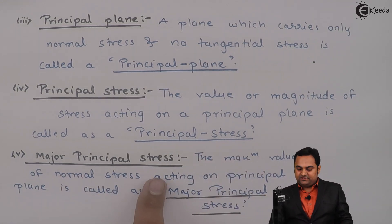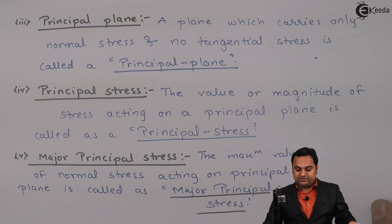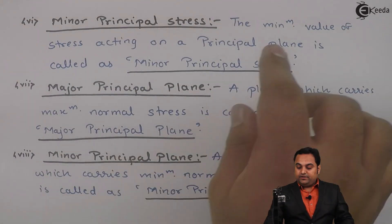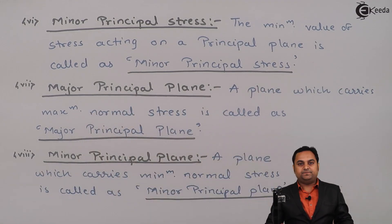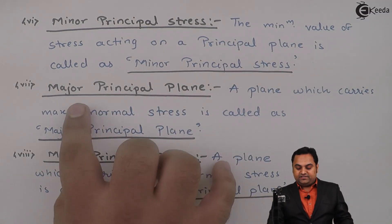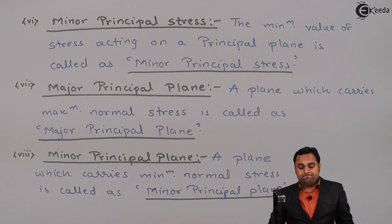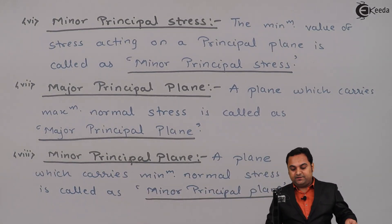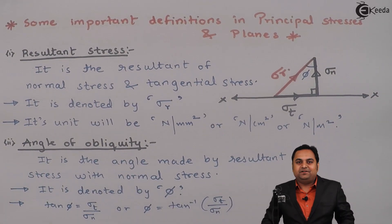Next, principal stress — the value or magnitude of stress on a principal plane. Major principal stress — the maximum value of normal stress on a principal plane. Minor principal stress — the minimum value of normal stress on a principal plane. Major principal plane — carries maximum normal stress. Minor principal plane — carries minimum normal stress. With this we complete the definition part.